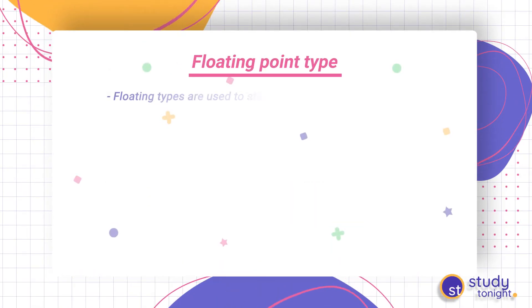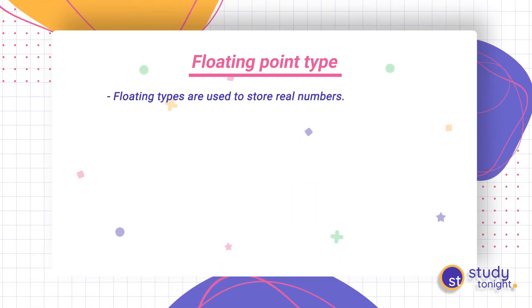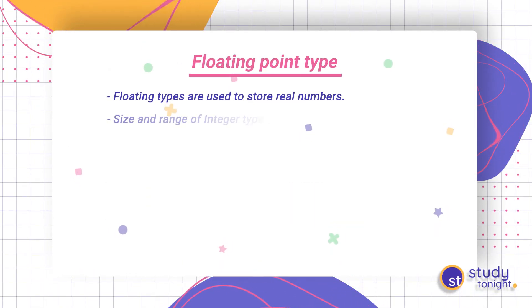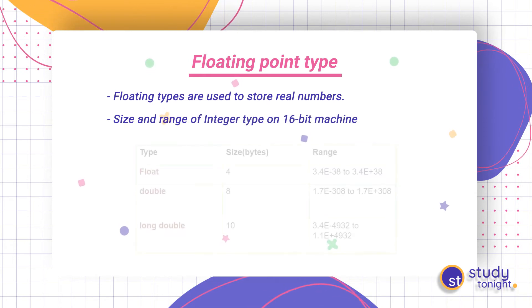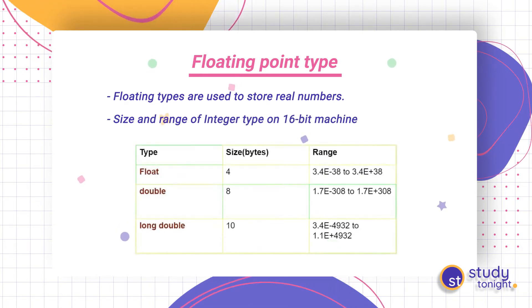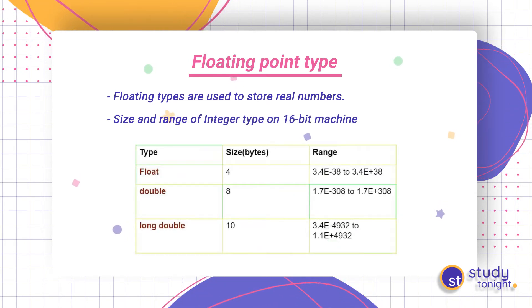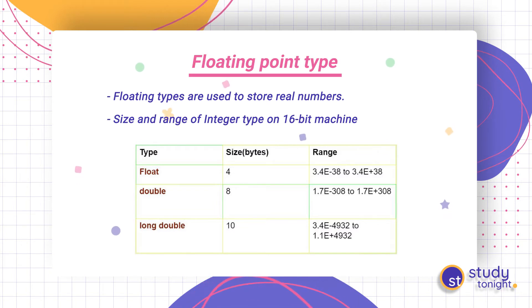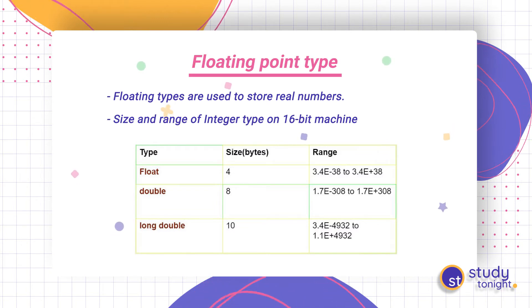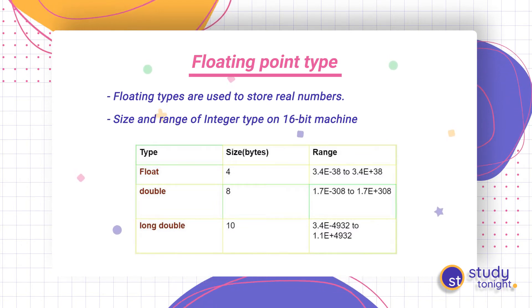Then the floating point type — float is used to represent real numbers, meaning decimal values. The size and range of float type on a 16-bit machine: float takes four bytes, double takes eight bytes, and long double takes ten bytes.